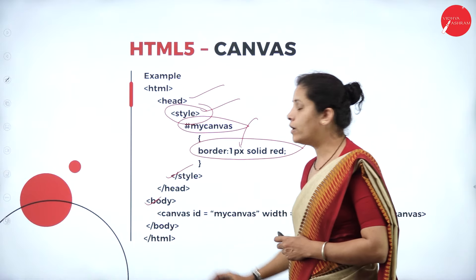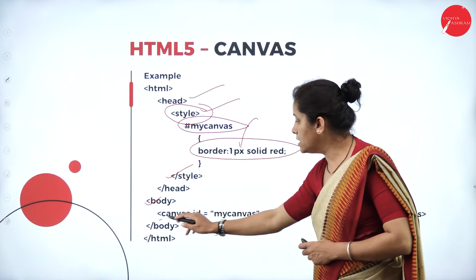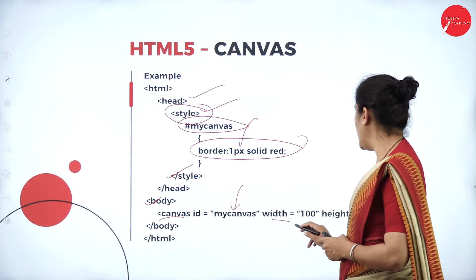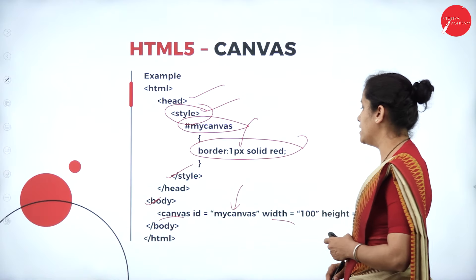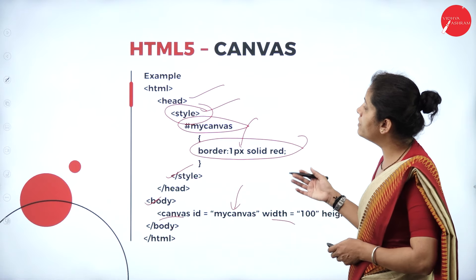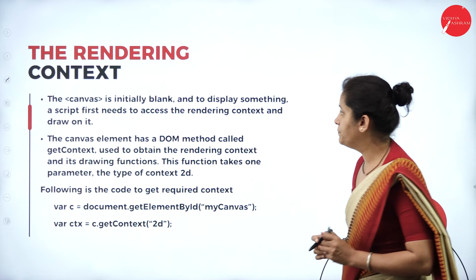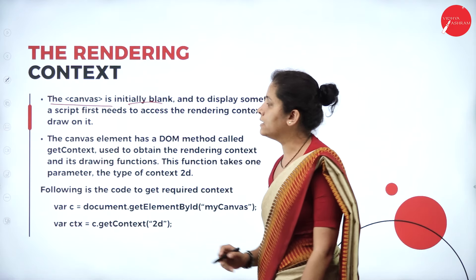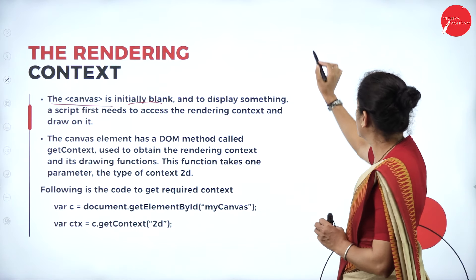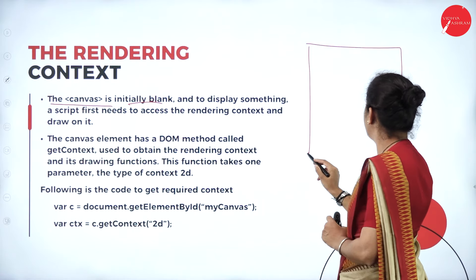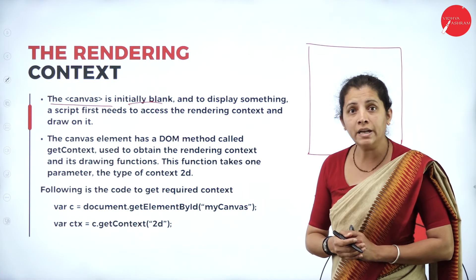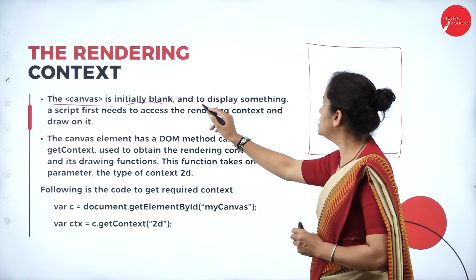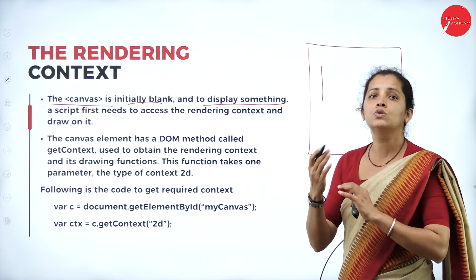In the body section, I'm going to create a canvas element. The canvas id is 'myCanvas', with height set to 100 and width set to 100. Initially, the canvas is blank — it represents an empty rectangle space on the web page with no border and no text or content.